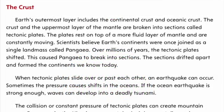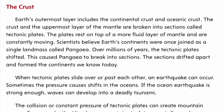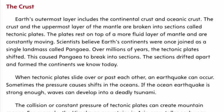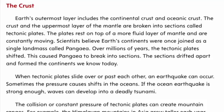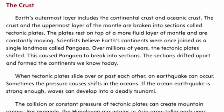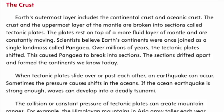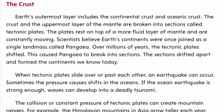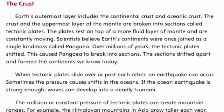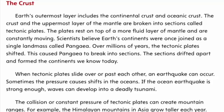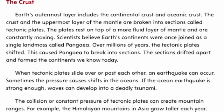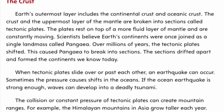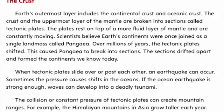The crust. Earth's outermost layer includes the continental crust and oceanic crust. The crust and the uppermost layer of the mantle are broken into sections called tectonic plates. The plates rest on top of a more fluid layer of mantle and are constantly moving. Scientists believe Earth's continents were once joined as a single landmass called Pangea. Over millions of years, the tectonic plates shifted, causing Pangea to break into sections.